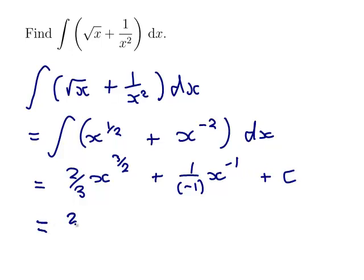So we're going to get 2 thirds of x to the 3 halves minus x to the minus 1 plus c. Now it's traditional to write things without negative powers. So that's equal to 2 thirds of x to the 3 halves minus 1 over x plus c.